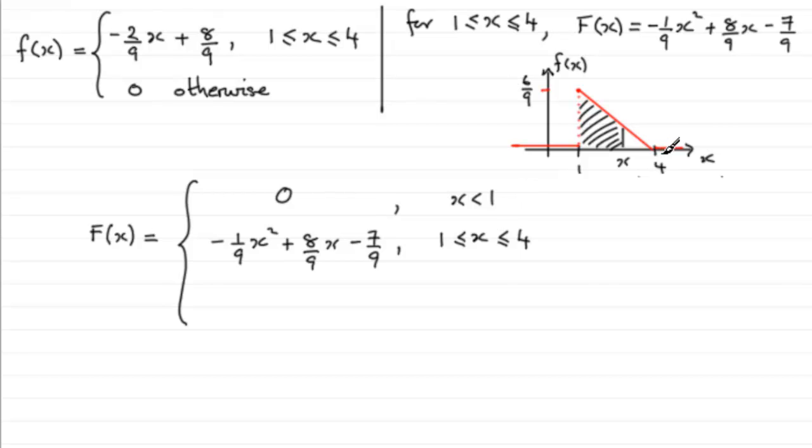And when x is greater than four, what's it going to be? Then it's going to be one - we're always guaranteed to get a number less than or equal to a given number that is greater than four.